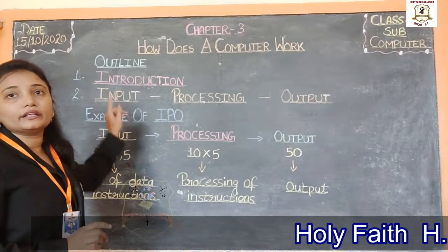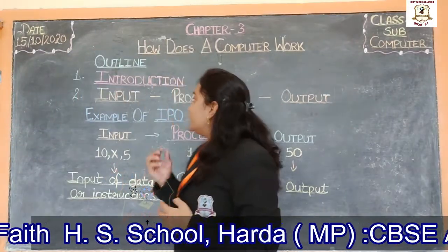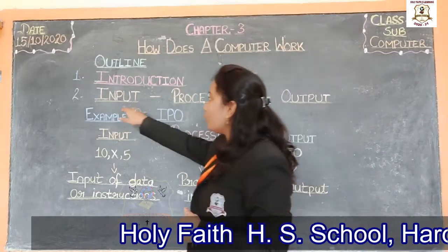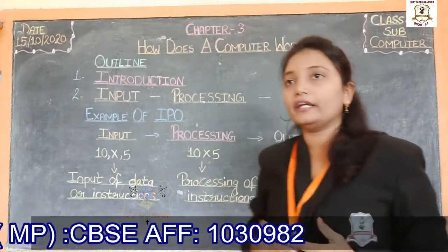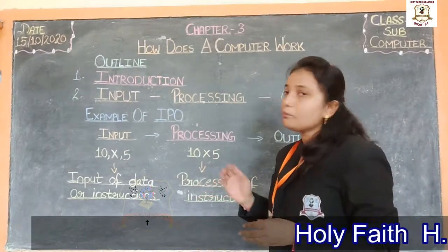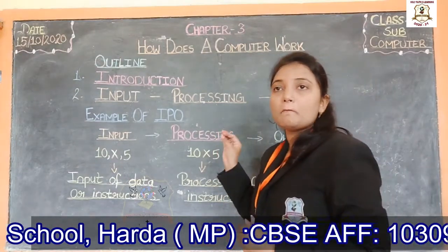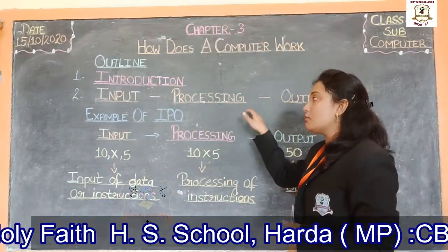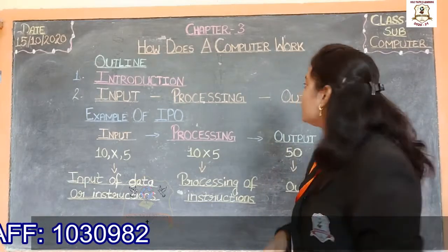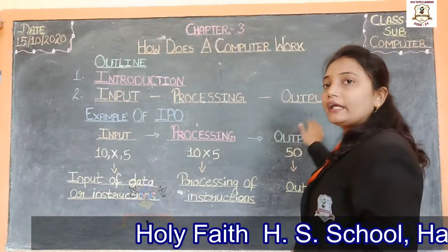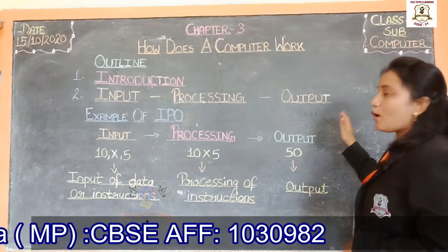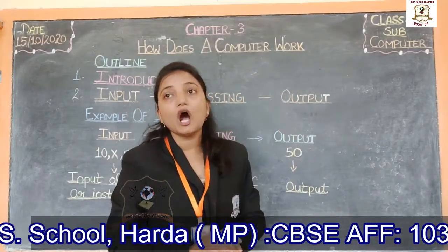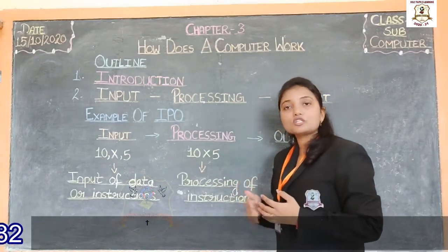What is input? The data and instructions that we enter into the computer is called input. Keyboard and mouse are used for this work. What is processing? Working on data is called processing. What is output? The data and instructions that have been processed is called output. Monitor and printer are the most common output devices.